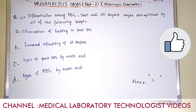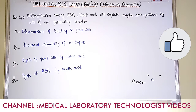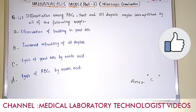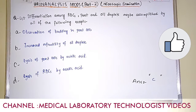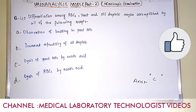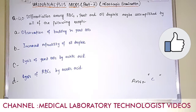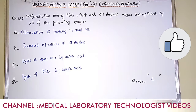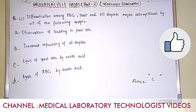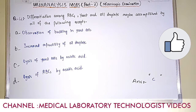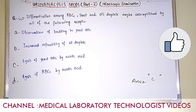Question number 4. Differentiation among RBCs, yeast cells, and oil droplets may be accomplished by all of the following except. Option A: observation of budding in yeast cells. Option B: increased refractility of oil droplets. Option C: lysis of yeast cells by acetic acid. Option D: lysis of RBCs by acetic acid. The answer is option C, lysis of yeast cells by acetic acid — that is not possible because acetic acid lyses RBCs, not yeast cells. The other three options are valid methods to differentiate among RBCs, yeast, and oil droplets.